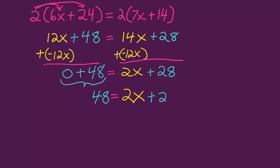I need to move the 28 over by the other constant term. 48 is a constant term, 2x is a variable term, 28 is a constant term. I need to move both constant terms together.